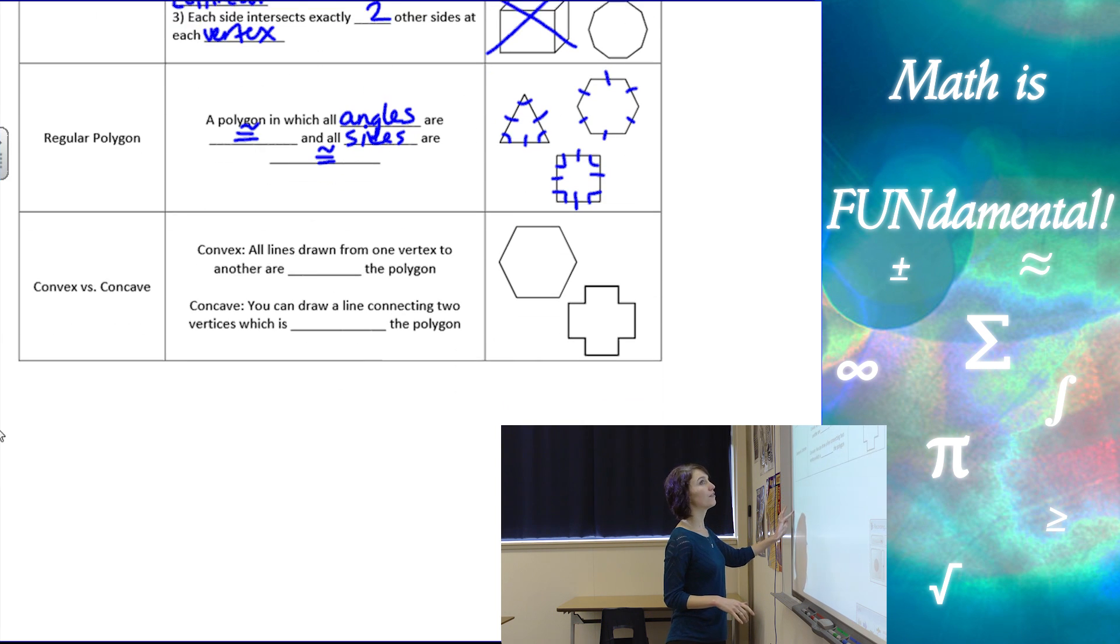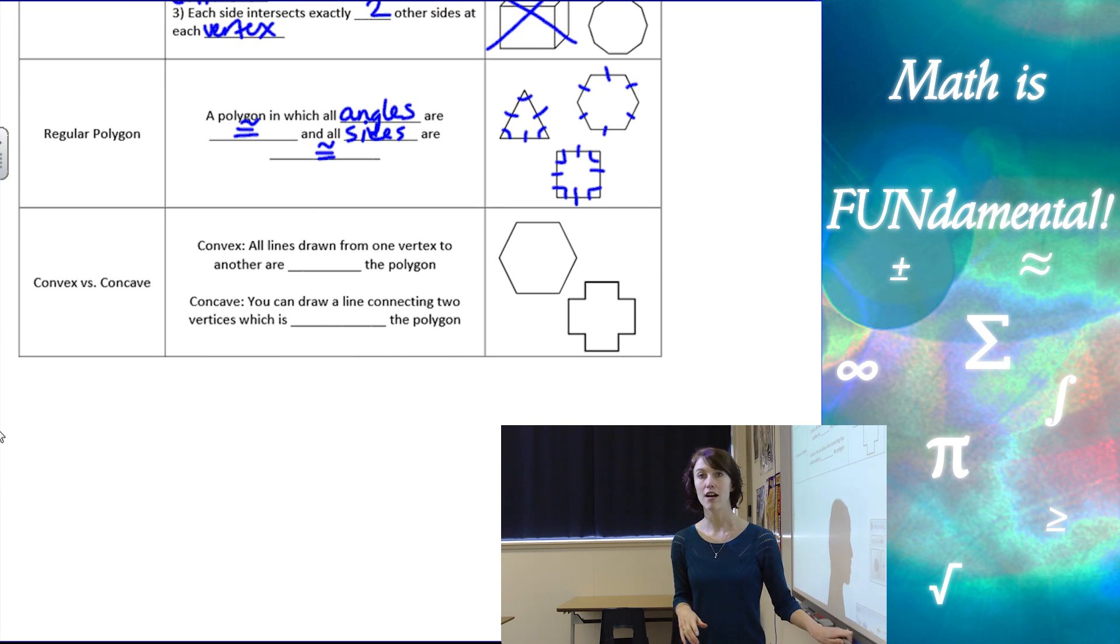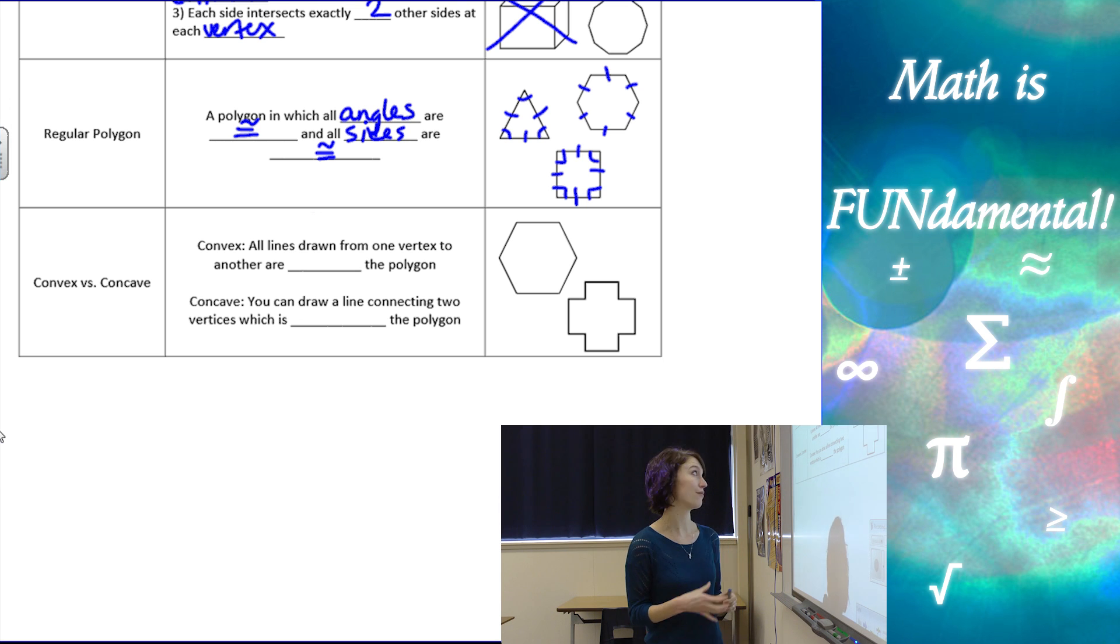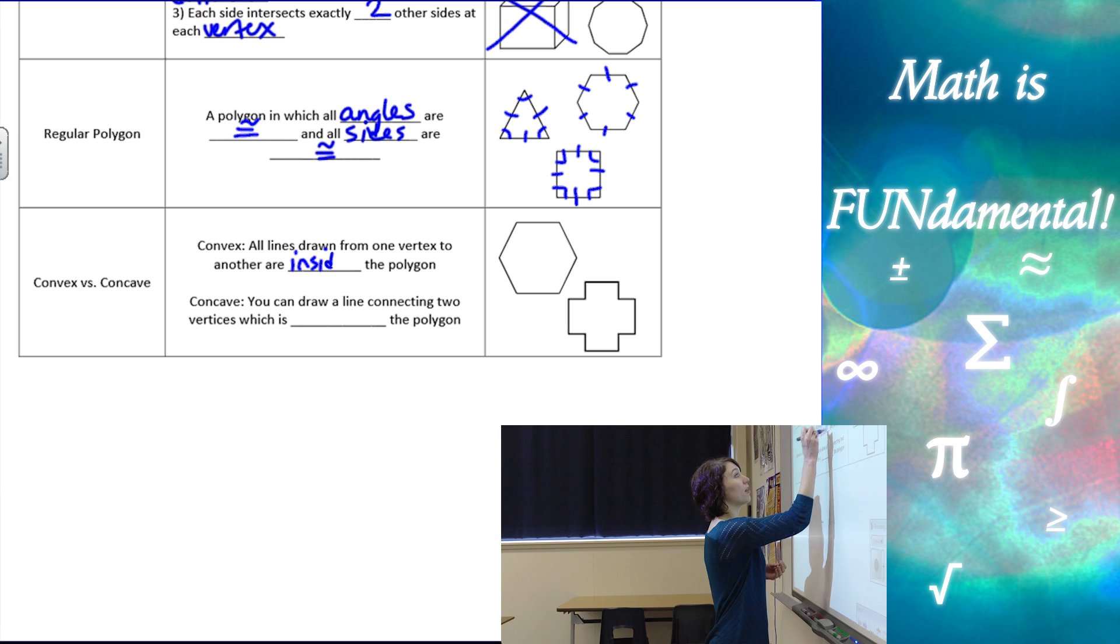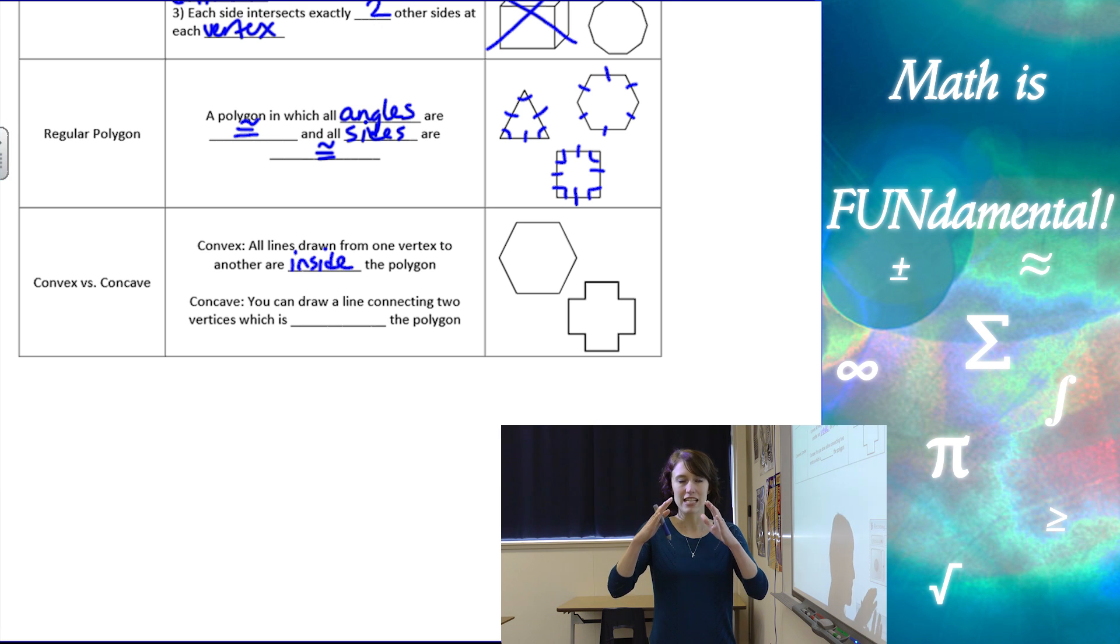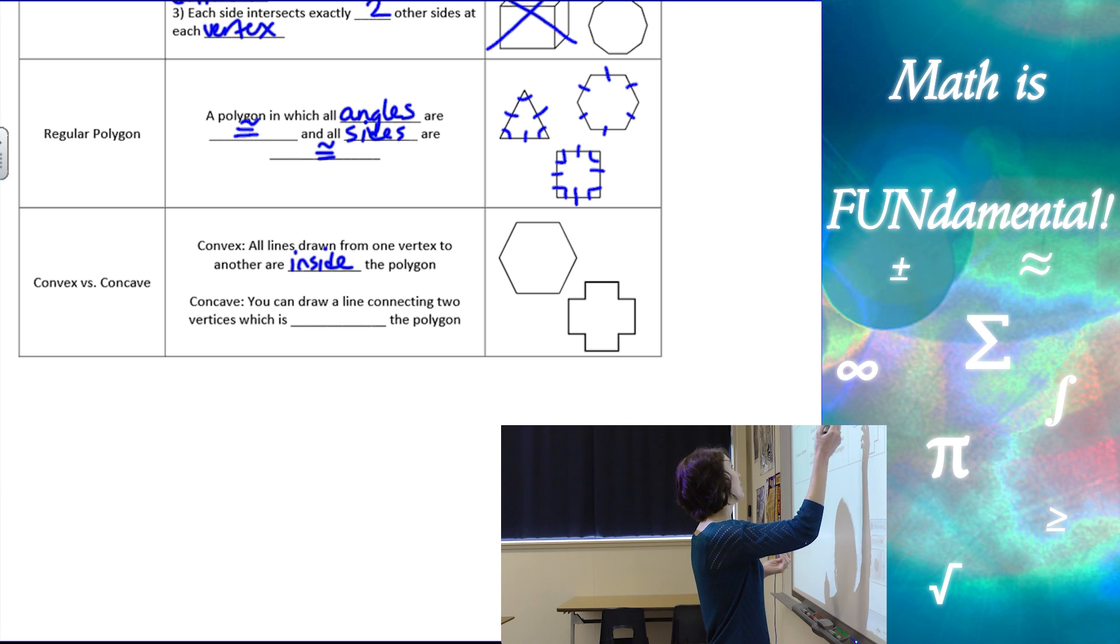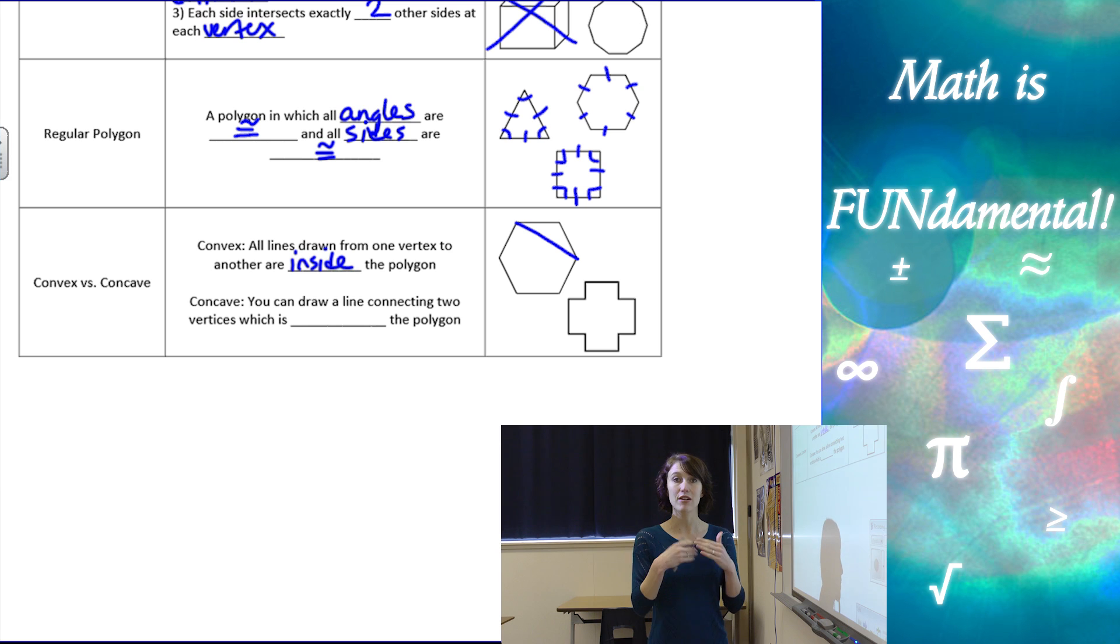The last vocab term we have is convex and concave. Convex is when all lines drawn from one vertex to another are inside the polygon. You can kind of think of convex as at all vertices, the shape is bending outward. If I draw any line from any two vertices, it has to go inside. There's no way it can go outside.